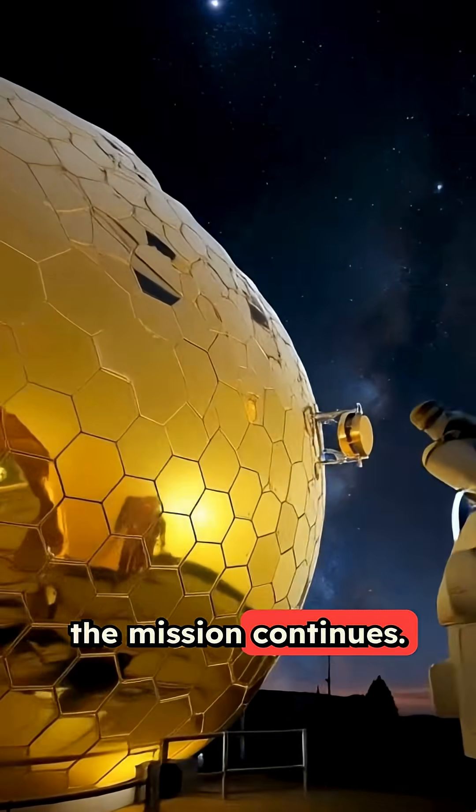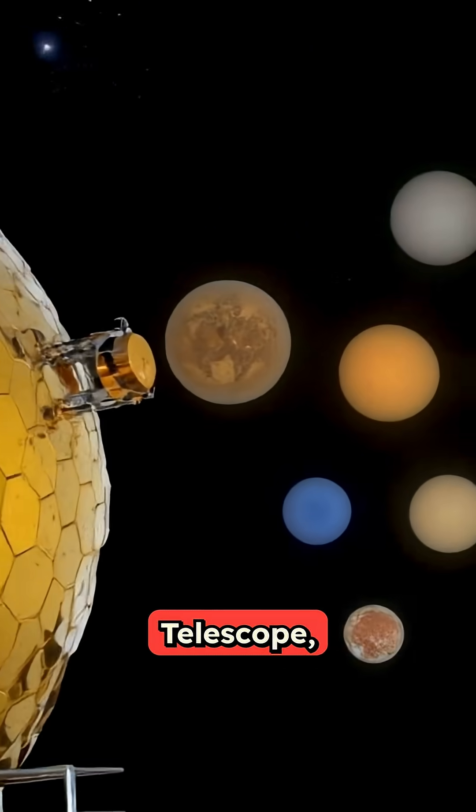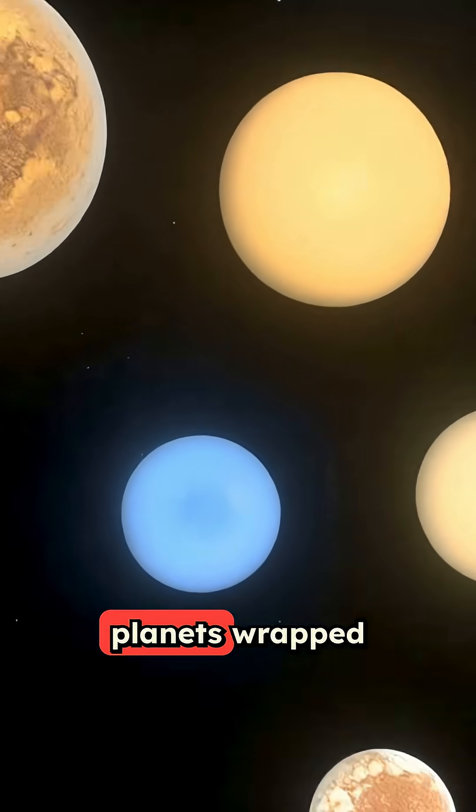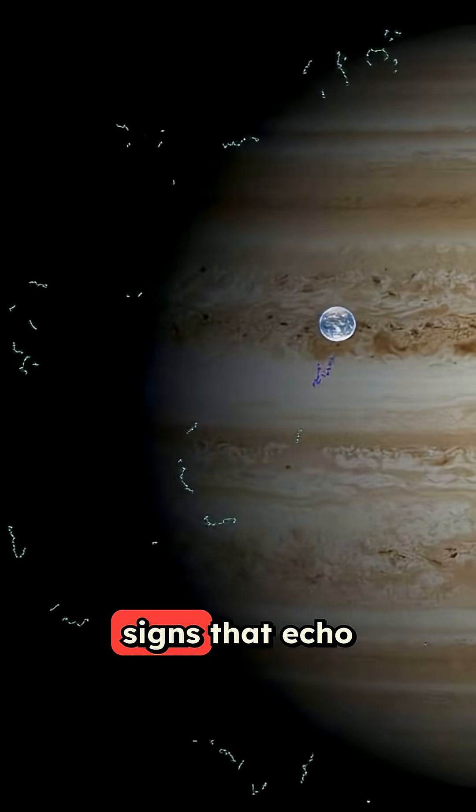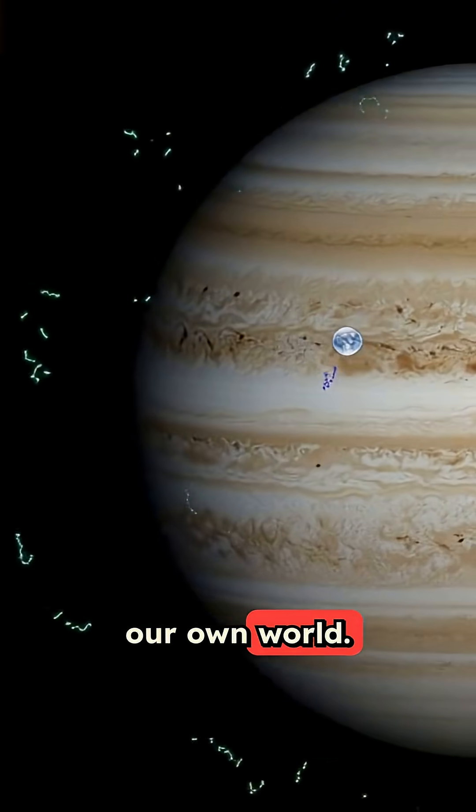Now the mission continues. With TESS and the James Webb Space Telescope, scientists are uncovering planets wrapped in warm air, with spectral traces of oxygen and water vapor, signs that echo the chemistry of our own world.